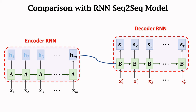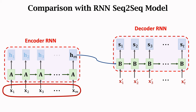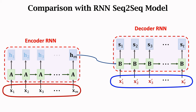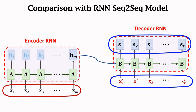Let's revisit the RNN sequence-to-sequence model. It has two input sequences: the encoder's inputs X1 to Xm and the decoder's inputs X'1 to X't. The inputs of the transformer are also the same two sequences. In sum, the transformer has the same input and output shapes as the RNN sequence-to-sequence model. Therefore, whatever an RNN sequence-to-sequence model can do, the transformer model can do the same.